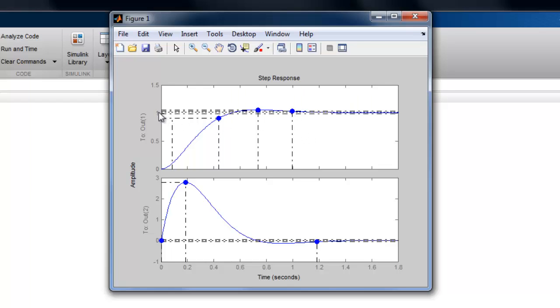I could calculate the exact gain needed by looking at the final value theorem and seeing exactly what the final value is for this system before I added this other gain. This is known as loop gain recovery.